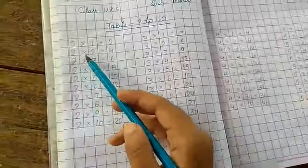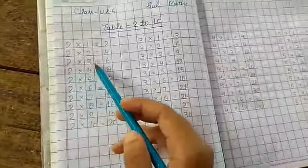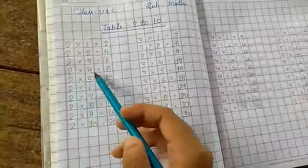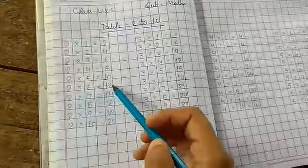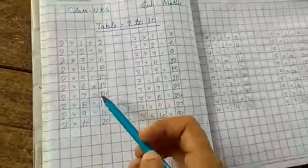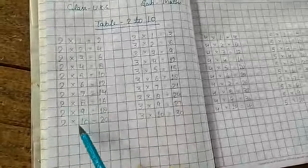2 1's are 2, 2 2's are 4, 2 3's are 6, 2 4's are 8, 2 5's are 10, 2 6's are 12, 2 7's are 14, 2 8's are 16, 2 9's are 18, 2 10's are 20.